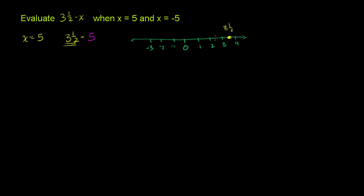So we're going to move 5 over to the left. So let's move 1 to the left, 2 to the left. Let me do that in another color. So 1 to the left, 2 to the left, 3 to the left, 4 to the left, 5 to the left brings us right there. When you just look at it visually, you get to negative 1½.